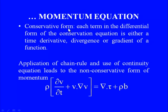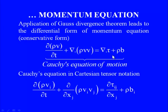This is the conservative form of the momentum equation — each term is either a time derivative, divergence, or gradient of a function. The first term is a time derivative, the second is divergence of ρvv, the third is divergence of the stress tensor, and the body force b can be represented as a gradient of some scalar quantity.